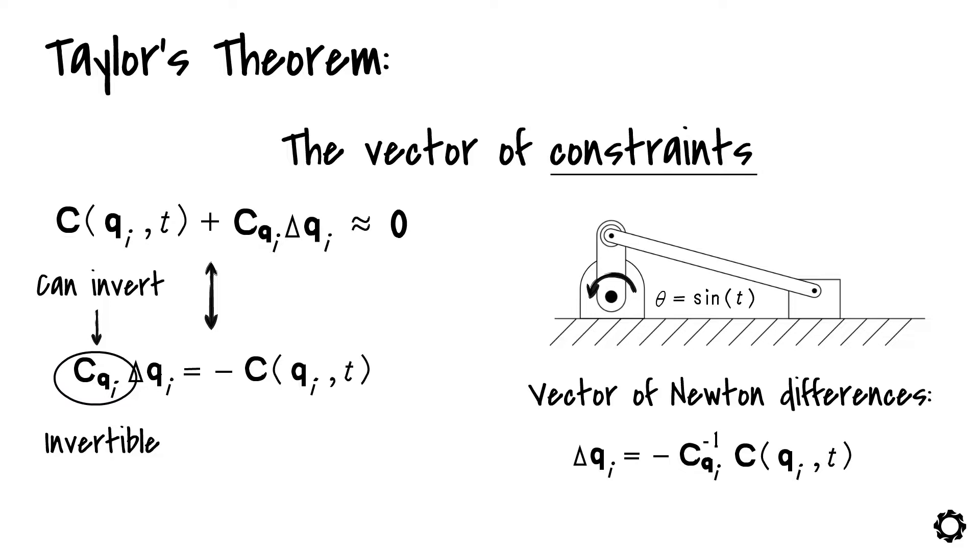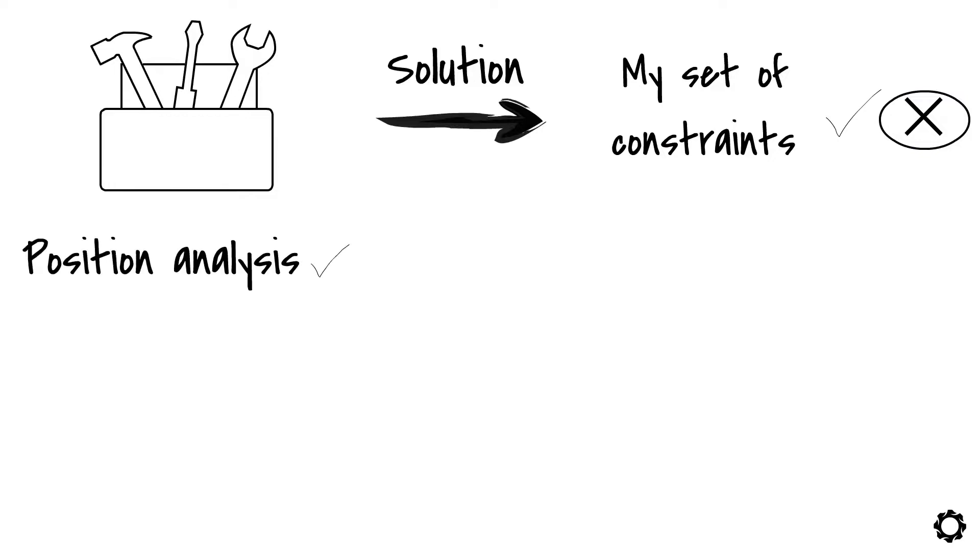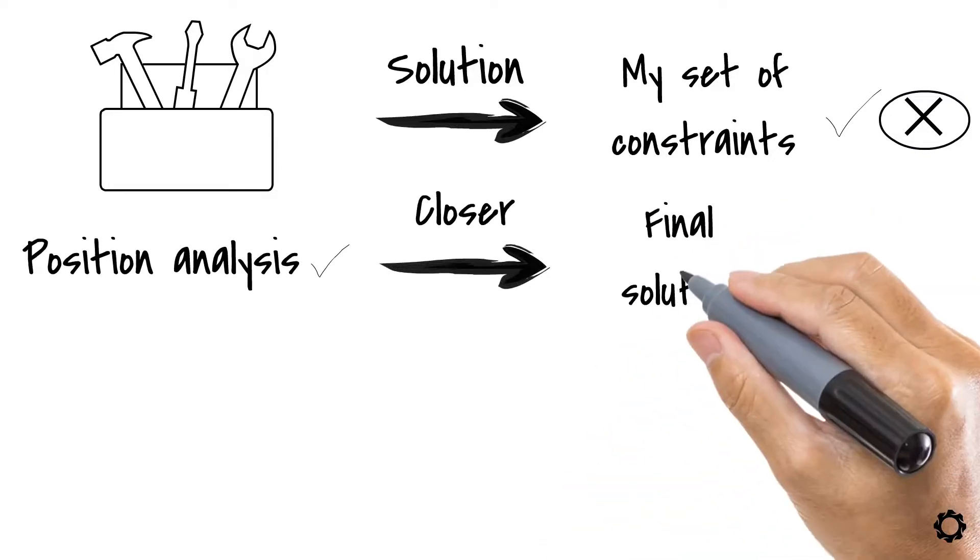You might think, well, now I have all the necessary components to know the solution of my set of constraints. Yes and no. Possibly no. In the best of the cases, at this point, you might be one step closer to the final solution.